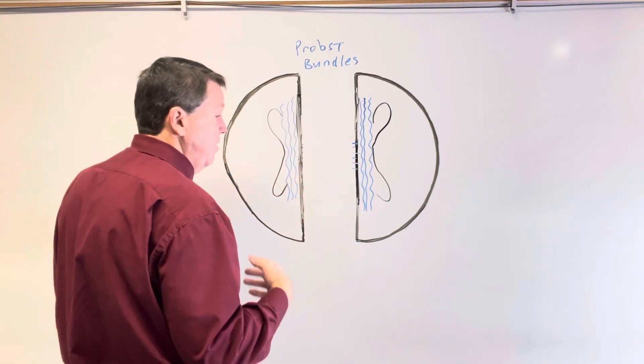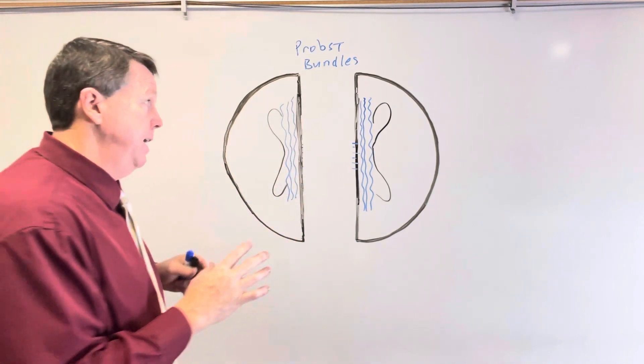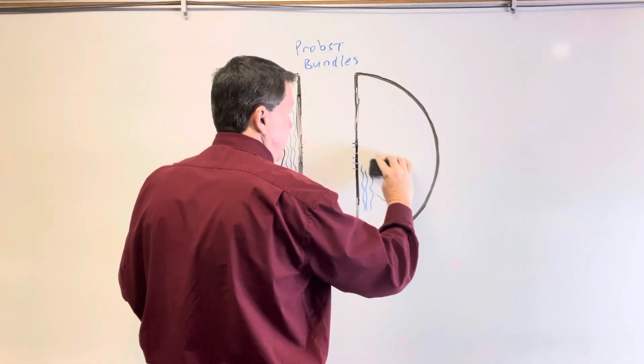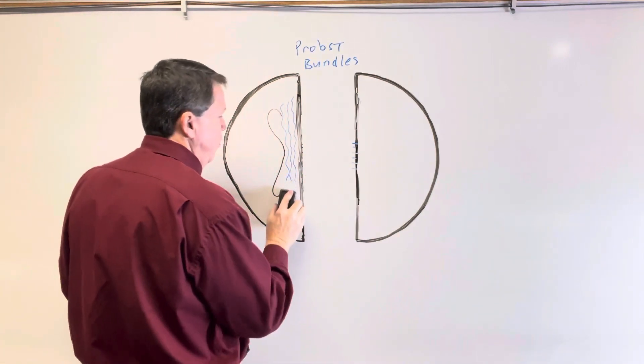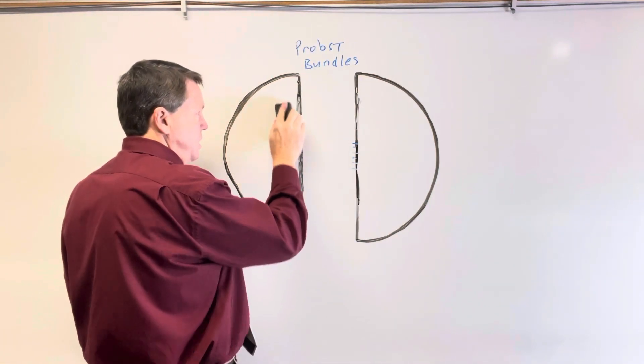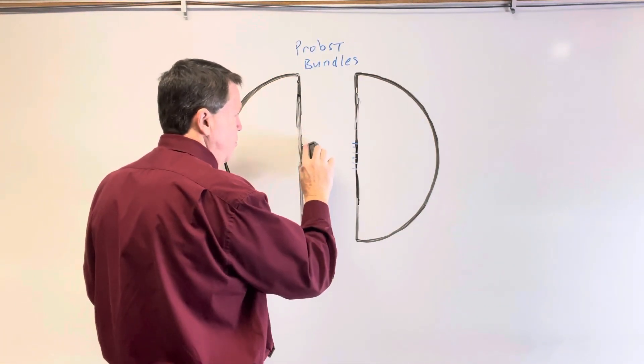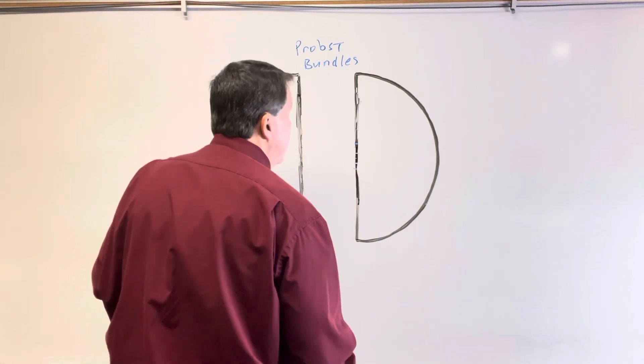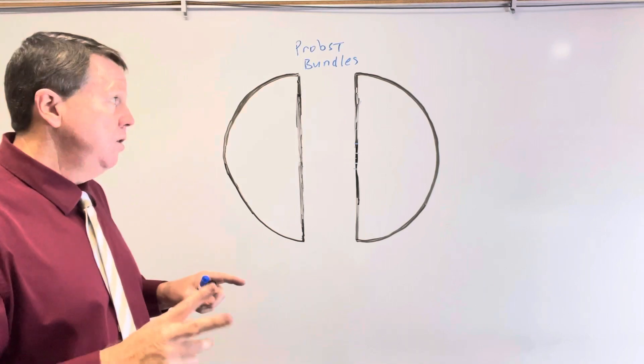Now, the other thing that could be happening is that you don't form these axons at all. It's a true agenesis of the corpus callosum. You don't form any of these axons. And therefore, you won't get those Probst bundles, and you won't get the race car sign.